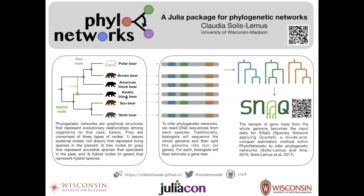To infer phylogenetic networks, we need DNA sequences from each species. Traditionally, biologists will sequence the whole genome and then split the genome into loci or genes, here represented by three colors: blue, green, and orange. Then for each of the genes, we would estimate one gene tree. And then from a collection of gene trees, we will run SNaQ, which is one of the functions within PhyloNetworks to estimate the phylogenetic network.